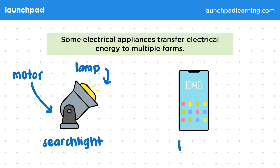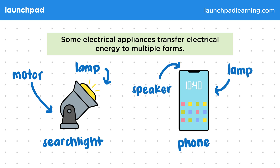Another good example is a phone, where there are multiple energy transfers which can occur — for example, in the lamp for the screen, also in the speaker for sound, there's also a motor needed for vibrations, and there are other light emitters which send signals. There are lots of other examples of complex appliances like these, such as cars, TVs, and computers.